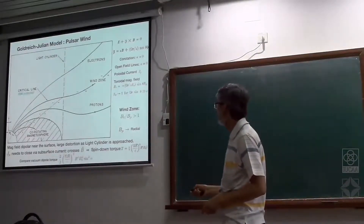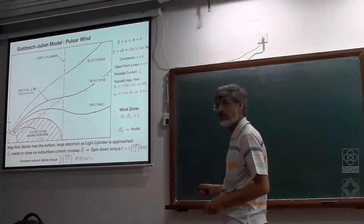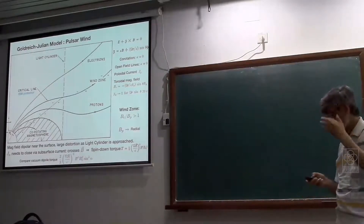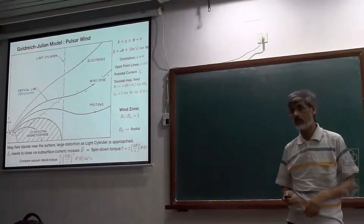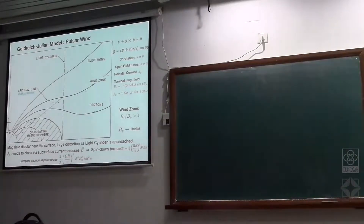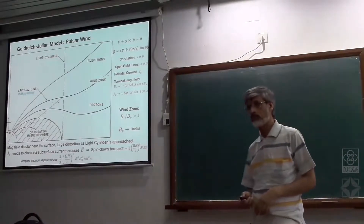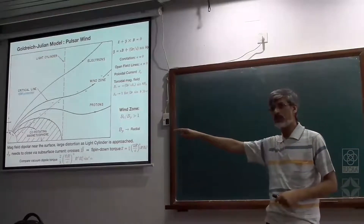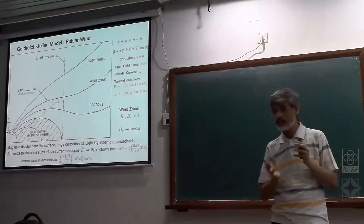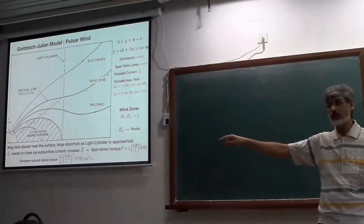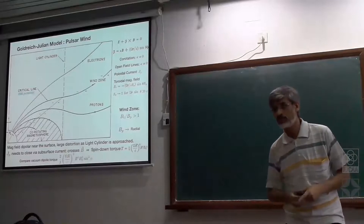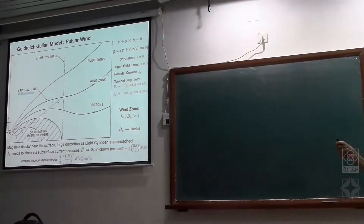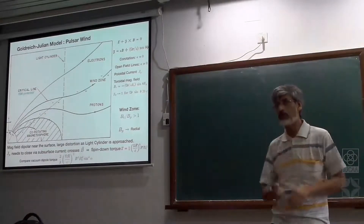Why does the cone become wider? Because the dipole field lines diverge. The field geometry is such that the angle is smaller near the polar cap, and as they go up they diverge. If you take a tangent here and a tangent there, the cone angle is different. So the line of sight cuts through field lines, and at greater distance from the stellar surface, it cuts the diverging field lines. If the beam is wider, it gives a longer traverse through the beam and thus a longer duration of the pulse.